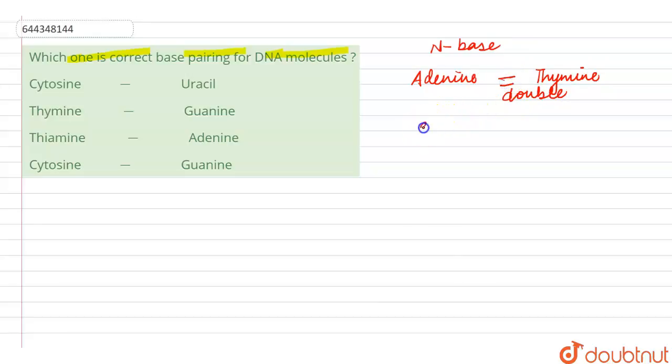Whereas another purine, which is guanine, is going to attach to the cytosine with the help of three double bonds. So here there are three hydrogen bonds. So here we see that the cytosine-uracil is the wrong combination because cytosine pairs with guanine.